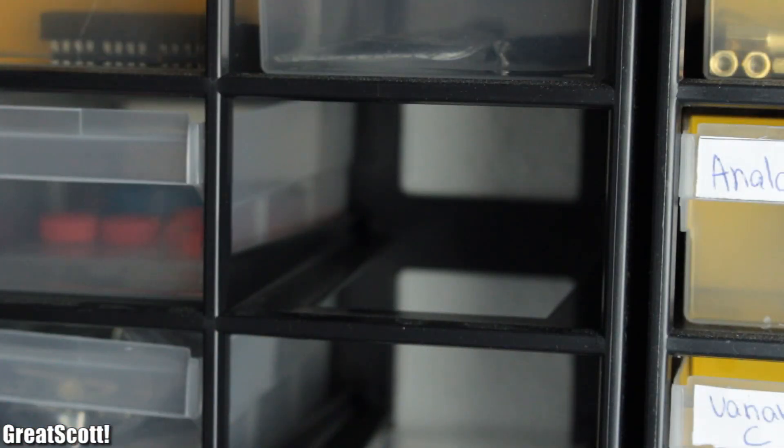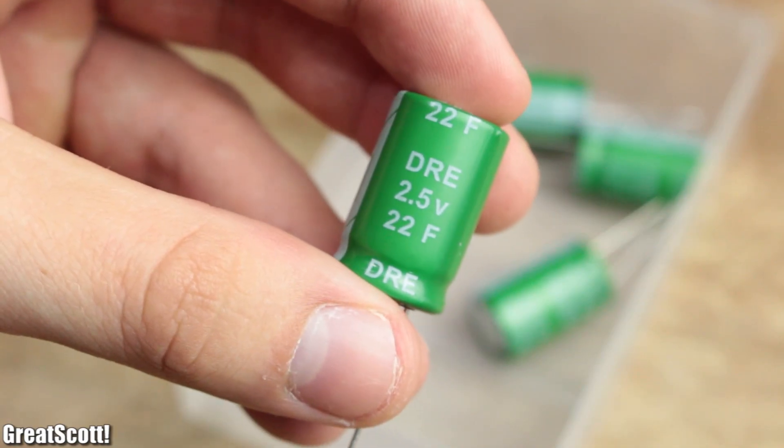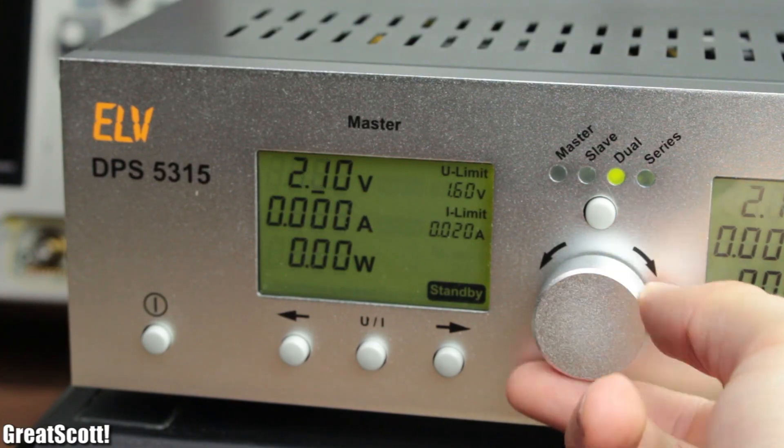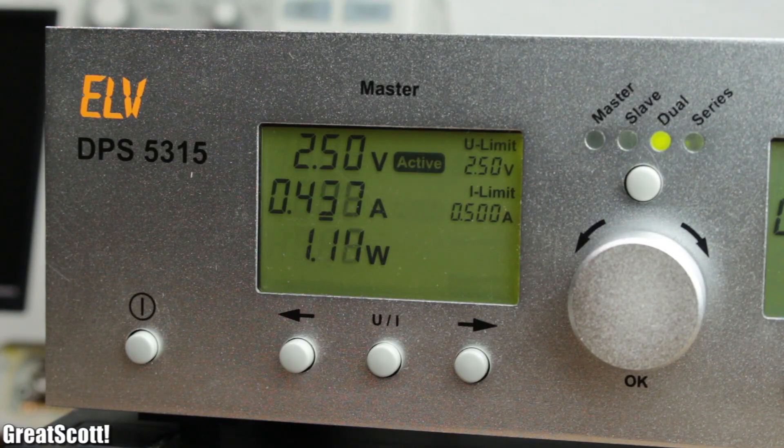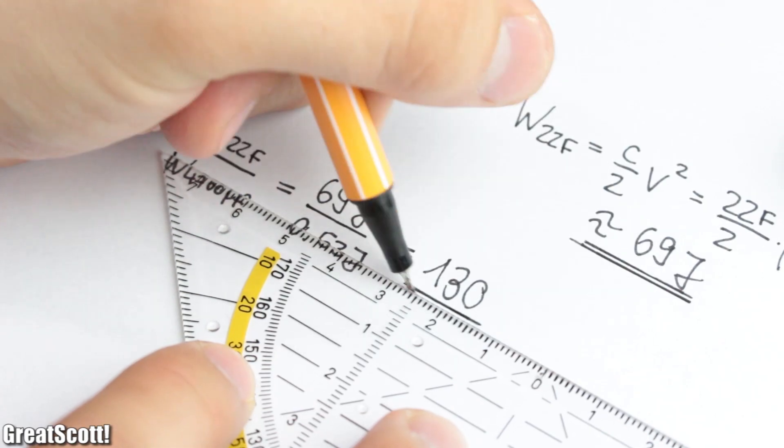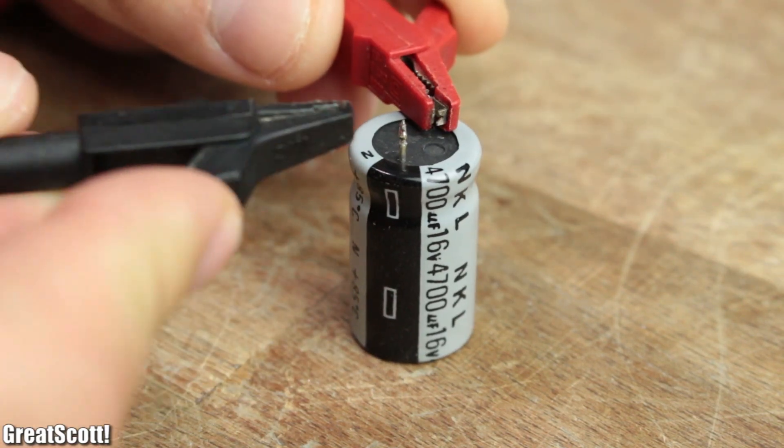I recently got myself these 22 Farad supercapacitors, which are indeed quite super. Because after charging them up to their maximum rated voltage of 2.5 volts, they are capable of delivering up to 69 joules of energy, which is around 140 times more than your average electrolytic capacitor at the same size.